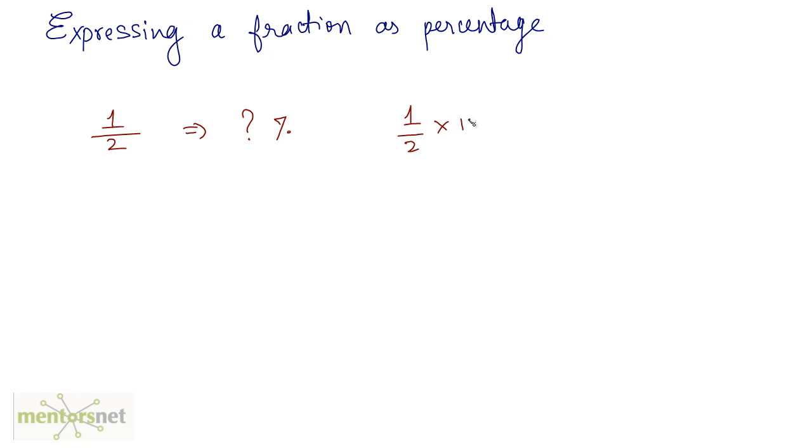1 by 2 times 100 will give me the percent. 2 times 50 is 100, so the percentage of 1 by 2 is 50%. That's how you do it.